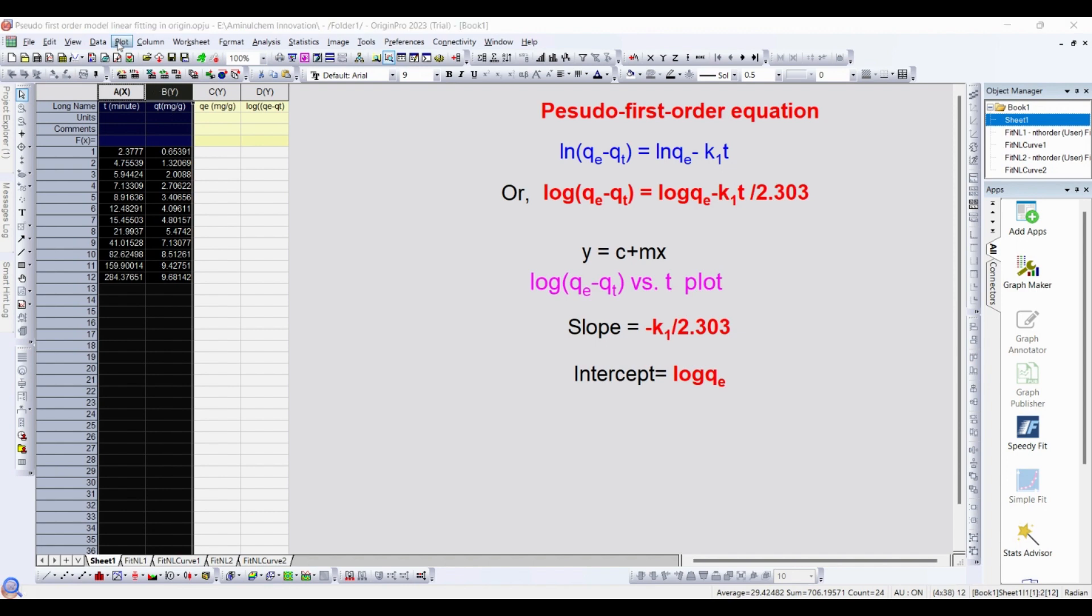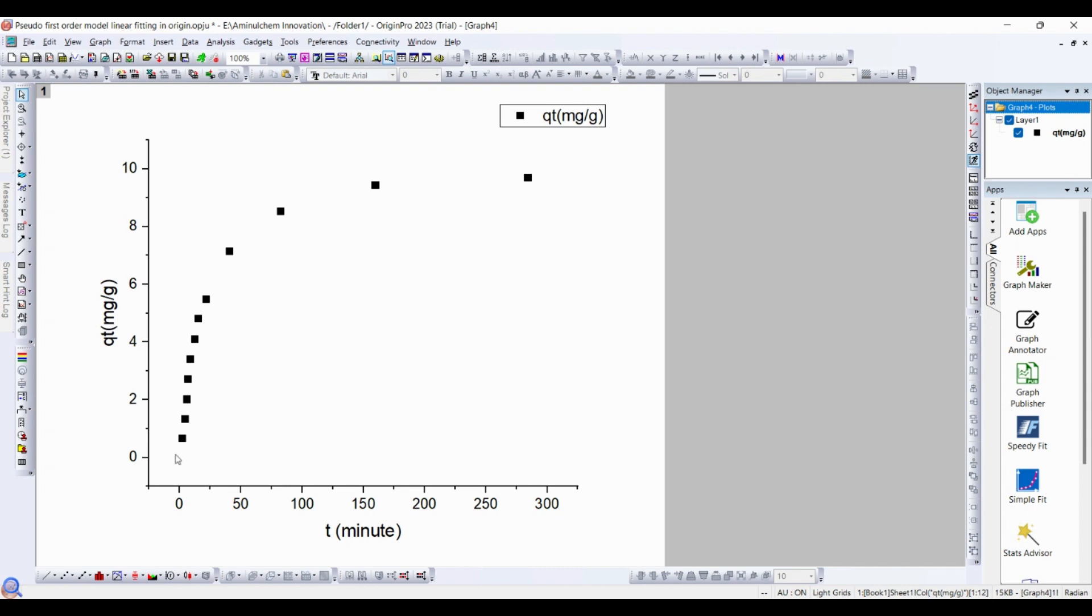you need to plot this. Select this and go to plot, then select scatter. Here is your plot.